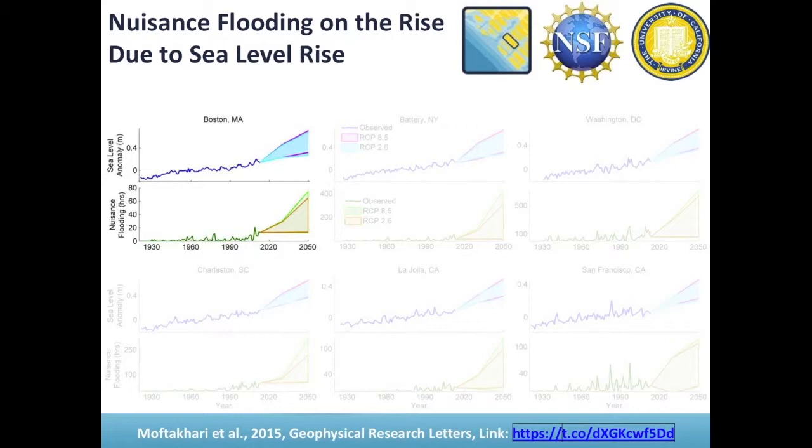We have looked into climate projections including sea level rise, with business-as-usual and moderate climate change scenarios. Those are the envelopes you see — the upper and lower bounds. We developed a simple model that projects nuisance flooding into the future in response to sea level rise. The envelope at the top shows projected sea level rise, and the envelope at the bottom shows projected increase in nuisance flooding under business as usual.